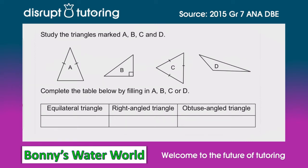Now let's look at the triangles we have to choose from. If we look at A, we notice that two of the sides have been marked with a certain icon and that icon indicates that those two sides are equal, but we don't see that same icon on the bottom of the triangle. That means it cannot be an equilateral triangle because this side is not the same as the other two sides. A triangle that has two sides that are the same is called an isosceles triangle.